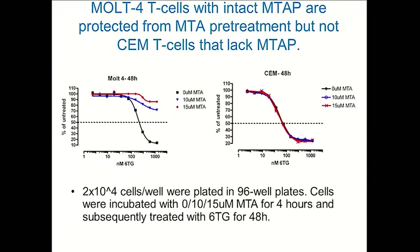Can we show this in our two cell lines — one with MTAP and one lacking MTAP? This slide nicely shows that the CEM cell line, which lacks MTAP, shows no effect of methylthioadenosine pretreatment on the lethality of 6-thioguanine. In contrast, the MOT4 cell line, which has intact MTAP, is protected from the lethal effects of 6-thioguanine by pretreatment with methylthioadenosine — serving as a surrogate for normal cells.